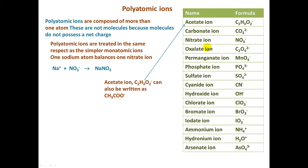You're going to have to memorize each one of these on this table, including the charges of each polyatomic ion. That's going to be very important. From these polyatomic ions, we're going to be able to derive other polyatomic ions and also name acids. So it's very important that you memorize the name, the formula, and the charge associated with each one of these.